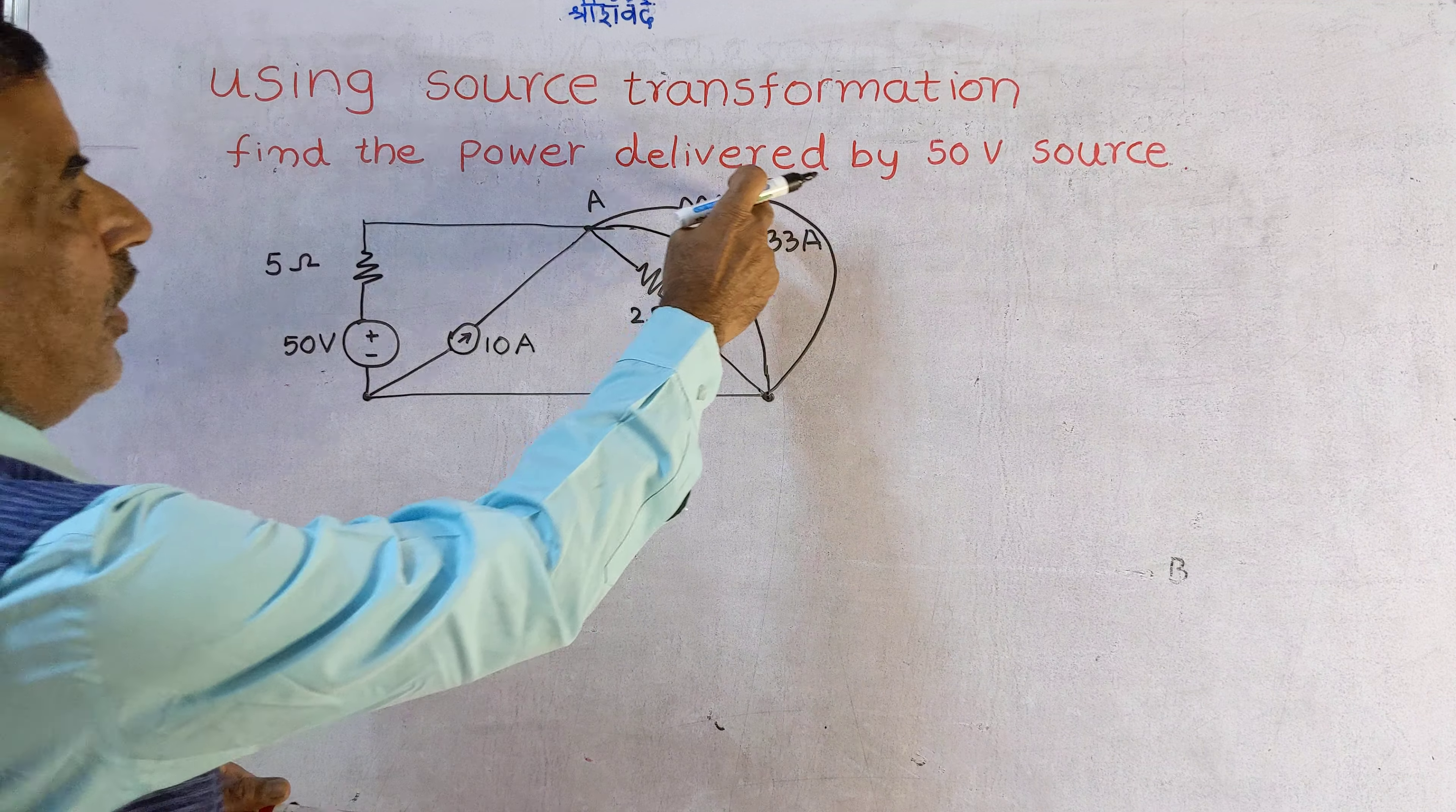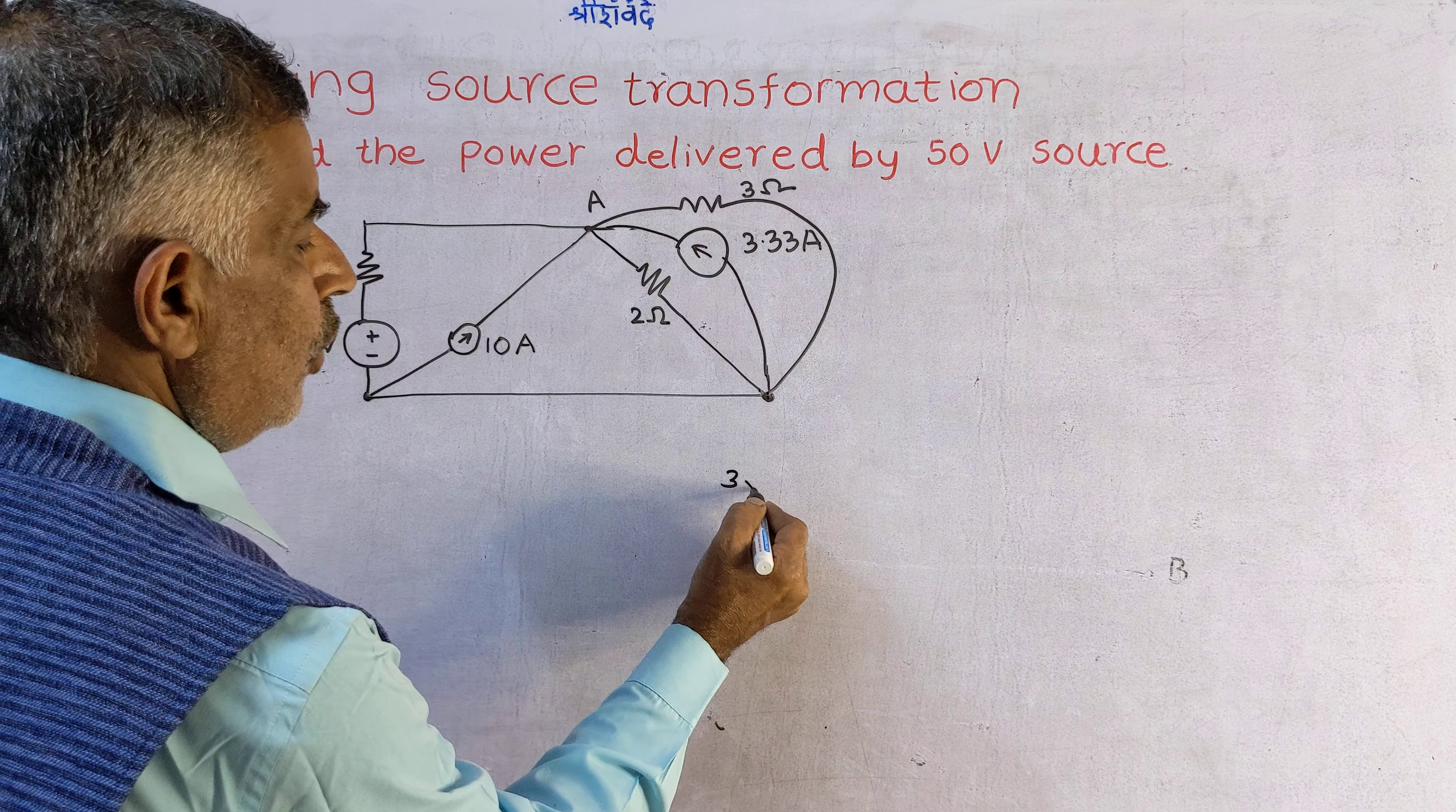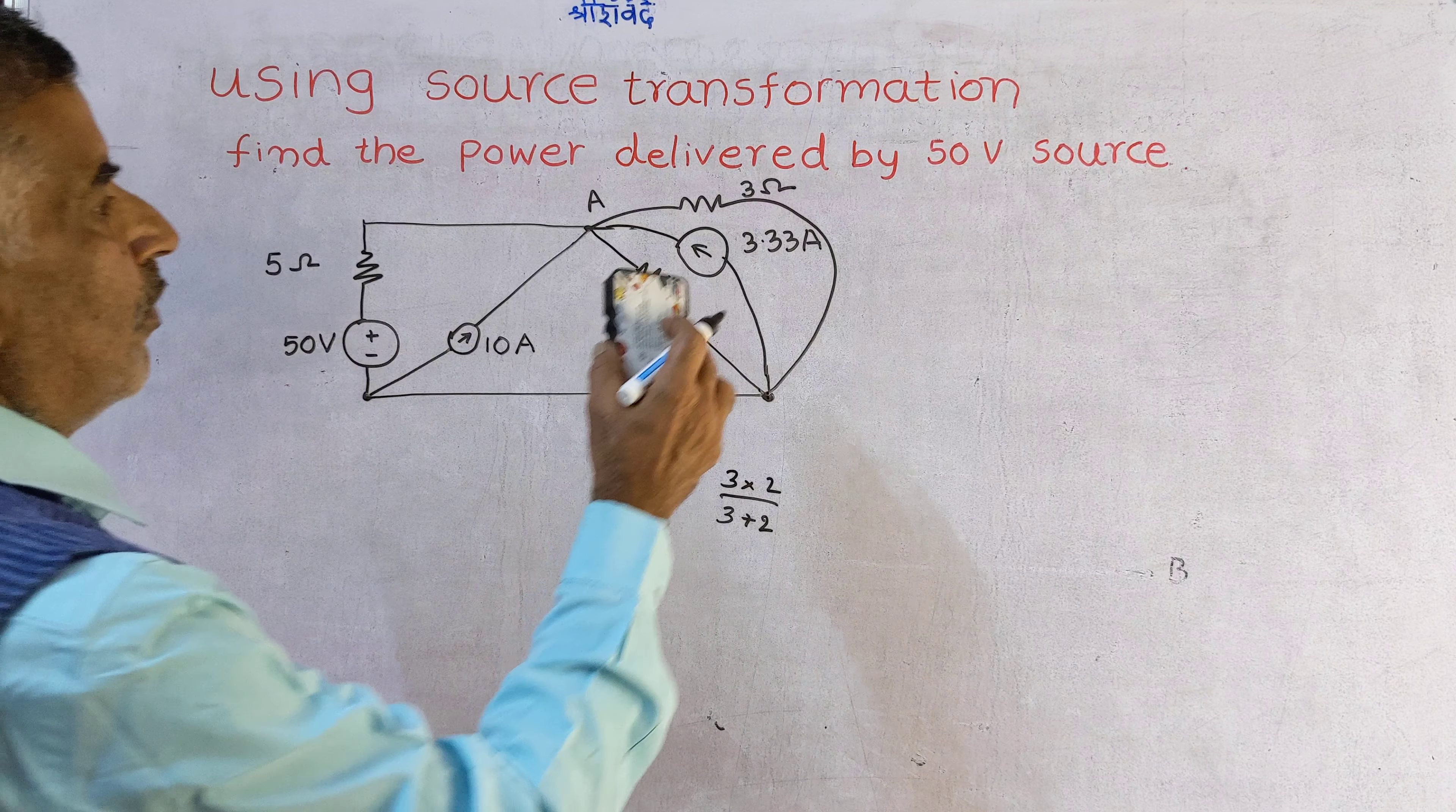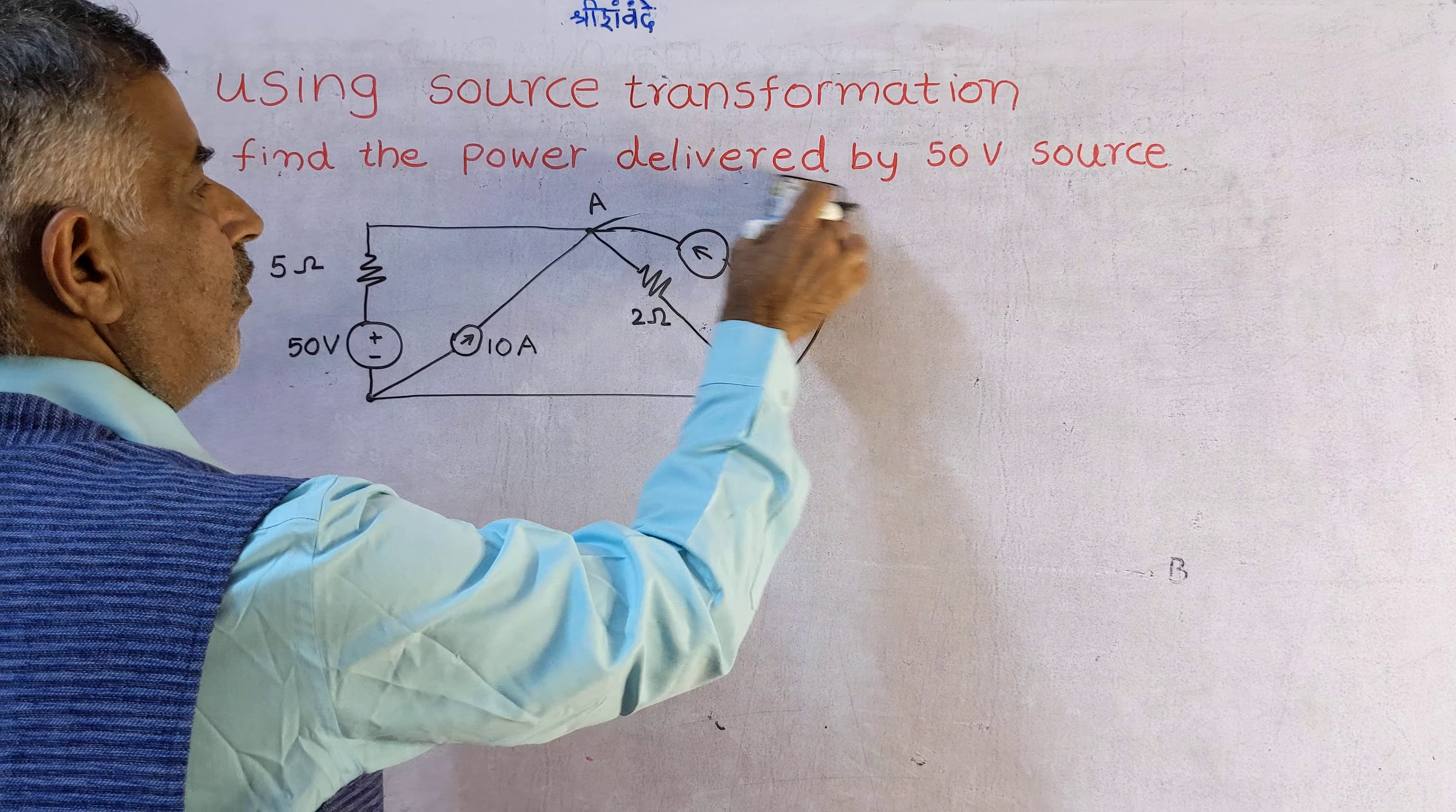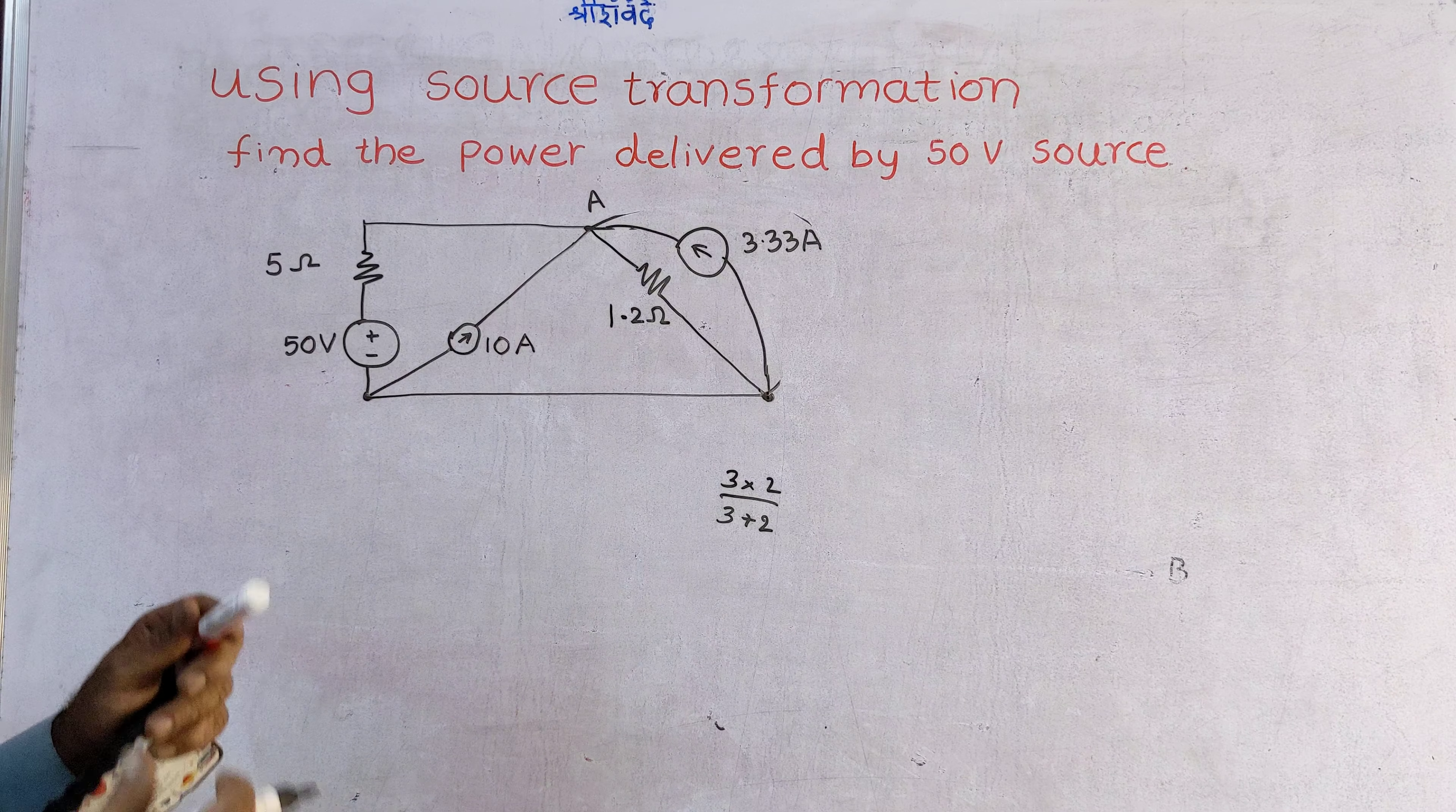3 and 2 are in parallel, therefore equivalent resistance of 3 and 2 is 3 into 2 divided by 3 plus 2, that is 1.2 ohms.